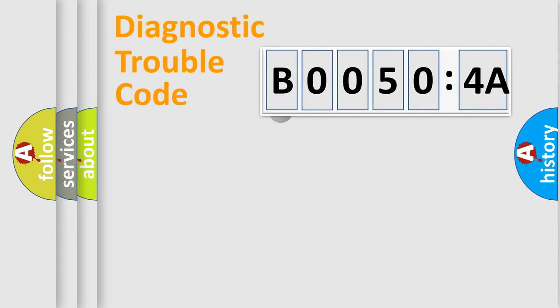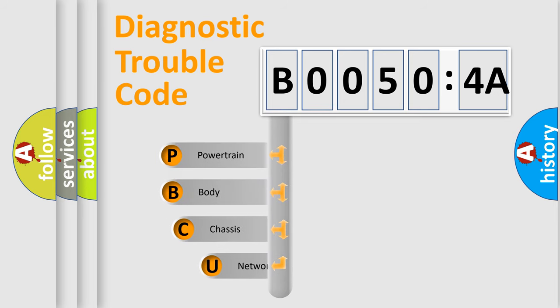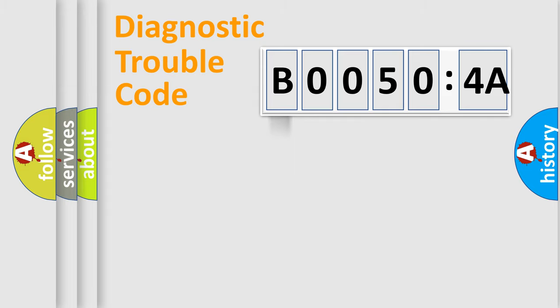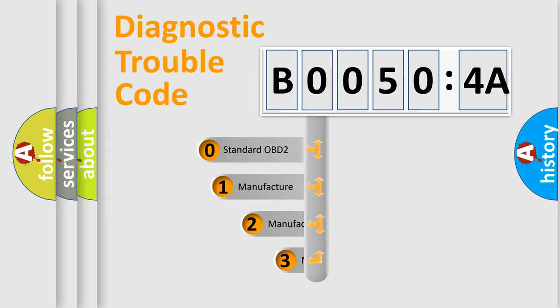First, let's look at the history of diagnostic fault code composition according to the OBD2 protocol, which is unified for all automakers since 2000. We divide the electric system of automobile into four basic units: Powertrain, body, chassis, network. This distribution is defined in the first character code.